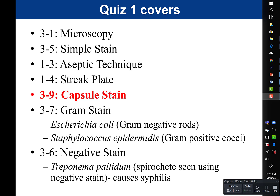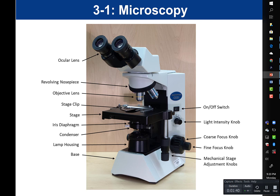We'll start with microscopy. When studying for the microscopy section, you should be able to recognize the various parts of the microscope — pretty much any part is fair game. You should know the mechanical stage knob, the fine focus, the coarse focus, the light intensity knob (also referred to as the rheostat), what the condenser is, where the iris diaphragm is, etc. You should be able to recognize a picture and identify the various parts of the microscope.